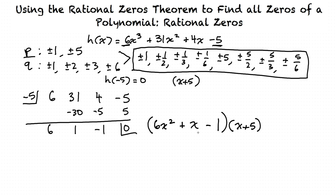Now 6x squared plus x minus 1 can be factored, giving us two other factors, which will leave us with our three factors and then our final zeros. To factor 6x squared plus x minus 1, we multiply 6x squared by negative 1 to get negative 6x squared. We want to find two factors of negative 6x squared that add up to equal positive 1x. We see that positive 3x and negative 2x multiply together to equal negative 6x squared, and 3x minus 2x is positive 1x.